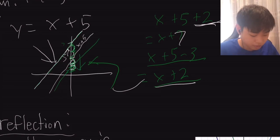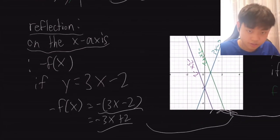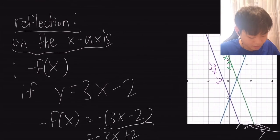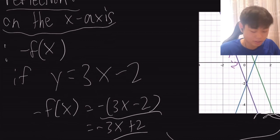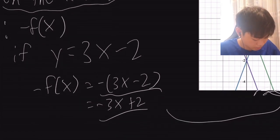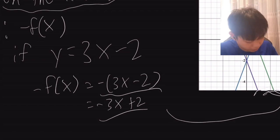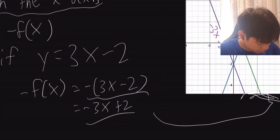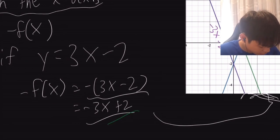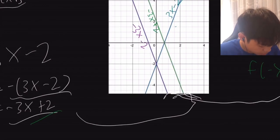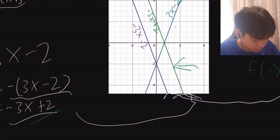Reflection on the x-axis uses negative f(x). If y equals 3x-2, then -f(x) equals -(3x-2), which becomes -3x+2. This is the green line here — as you can see, it's reflecting on the x-axis.